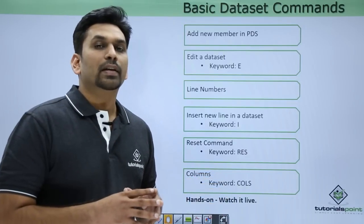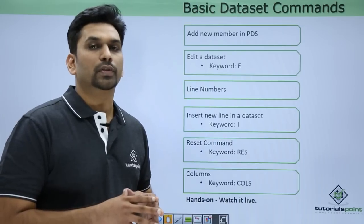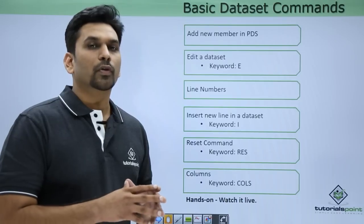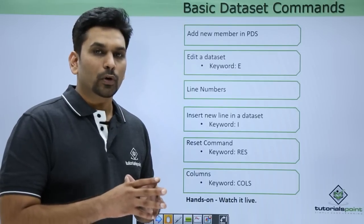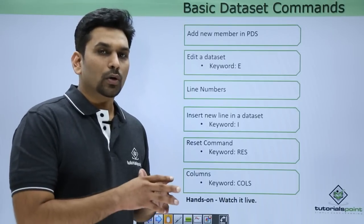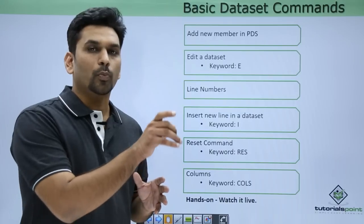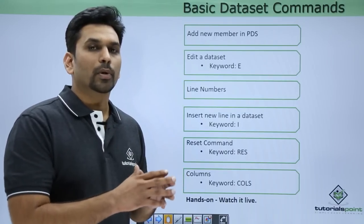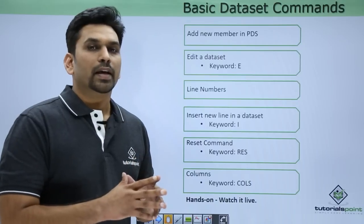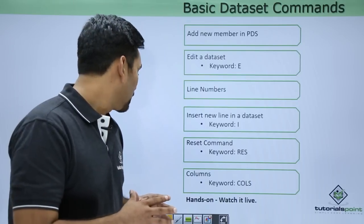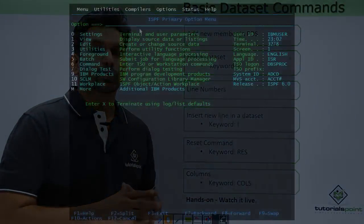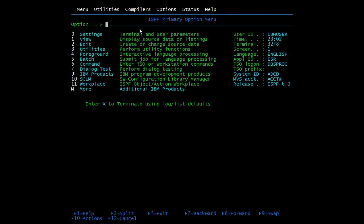The next is columns. We type COLS in the command line and hit Enter. The purpose of this is: while declaring a file you give the record length. Suppose you have given a record length of 80 and you want to see the column numbers — all the column numbers will be presented on the top of the line. You type COLS, hit Enter, and you will get column numbers starting from 1 to 80, as the record length was 80.